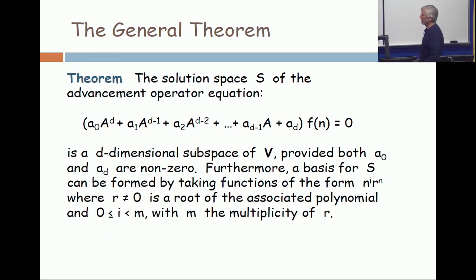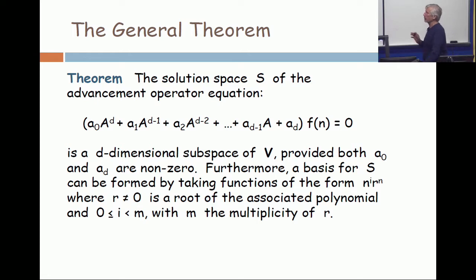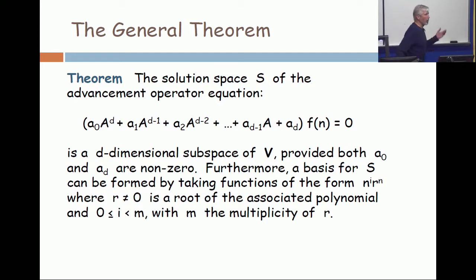What is the general theorem that we proved at the end? If you have a polynomial on f of n, then it's a d-dimensional subspace provided both the leading coefficient and the last coefficient are non-zero. I didn't put that last condition up there — I should have. I was implying it, but I didn't state it explicitly, and today I want to underscore that. The reason you want a sub d to be non-zero is I don't want the complex number zero to be a root of the polynomial.